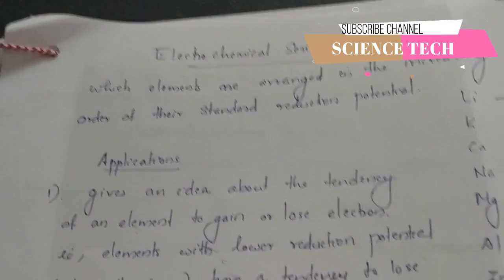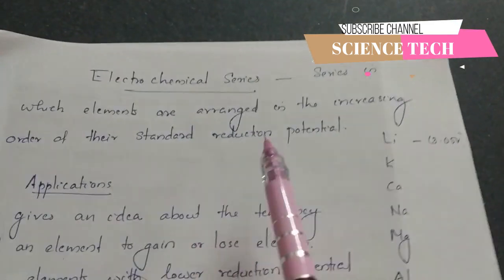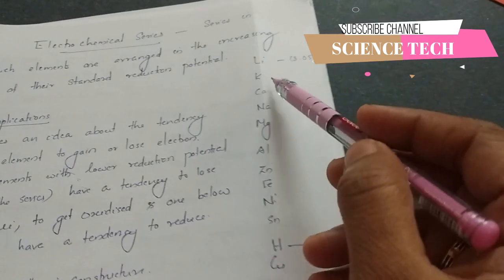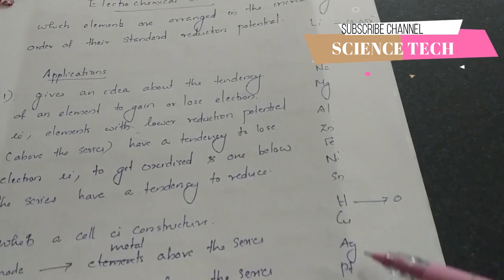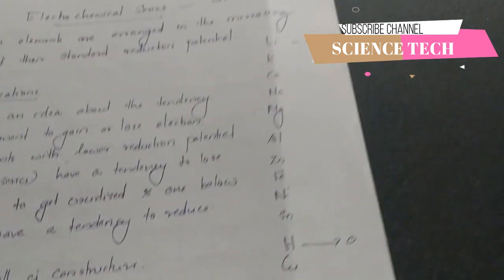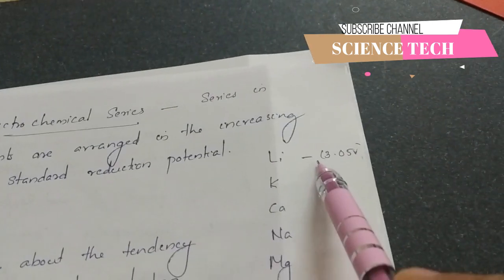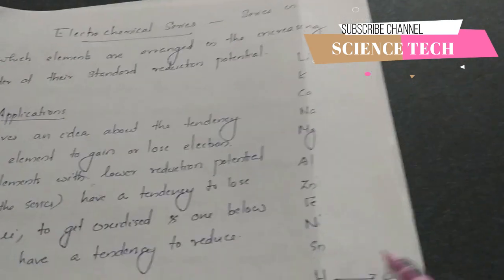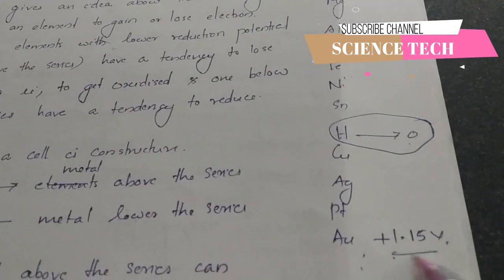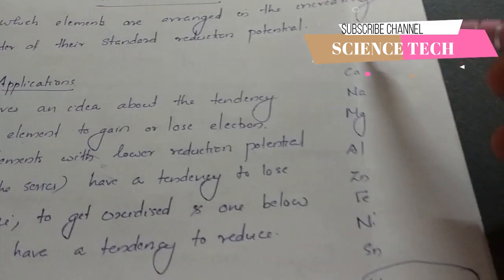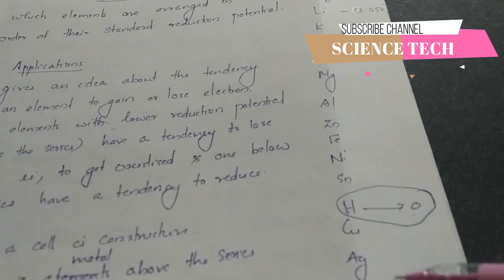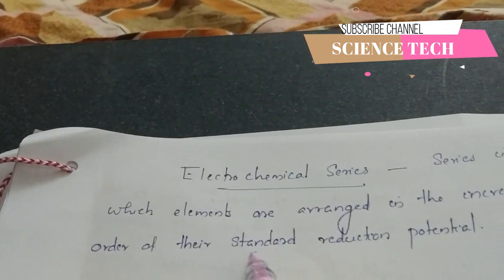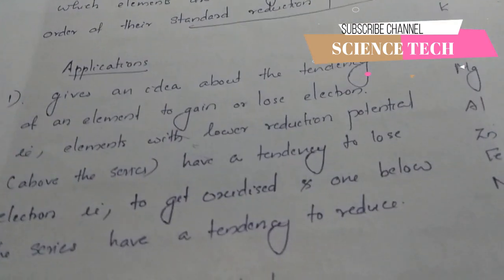Electrochemical series is very important for the application. It is the electrochemical series — the series in which elements are arranged in increasing order of their standard reduction potential. This is the application of the electrochemical series.